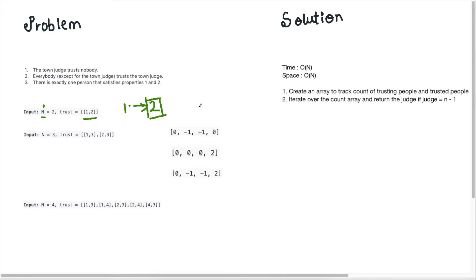Hey guys, Persistent Programmer here, and today we're going to do another legal question: Find the Town Judge. This is a very interesting question. What we're given is a 2D array — a 2D list of people in the trust matrix. In the first position of the matrix, we have person1 who trusts person2, and we're also given the total number of people, which in this case is 2.